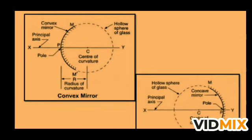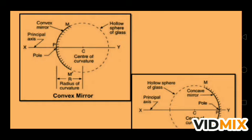Looking at the diagram separately — the dotted line is a hollow sphere polished from inside. The dark line bulging outside is the reflecting surface and is called the convex mirror. P, the center of the mirror, is the pole. C, the center of the sphere, is the center of curvature, indicated by C. The distance from P to C is the radius of curvature, capital R. The spherical mirror is MM' and XY is the principal axis joining the pole to the center of curvature.